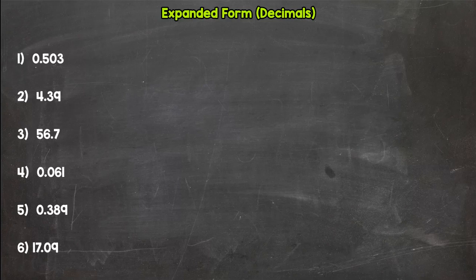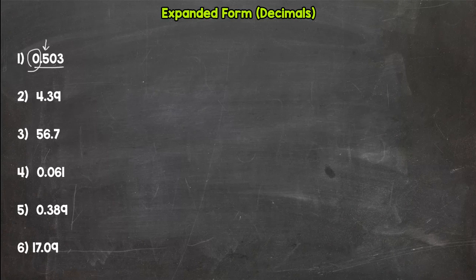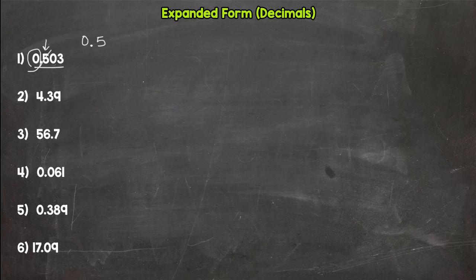Number one: here we have 0.503 — five hundred and three thousandths. We do not have any whole numbers, so our greatest valued digit is that five, and that five is worth five tenths. I'll do fractions and decimals here for expanded form. Starting with decimals: we have zero wholes, and that five is worth five tenths. We have a zero so we don't need to represent that.